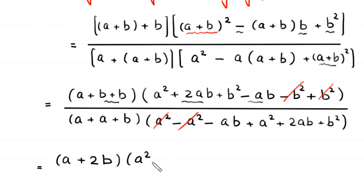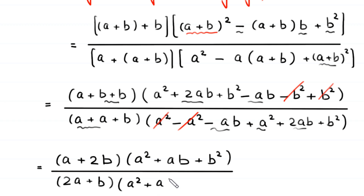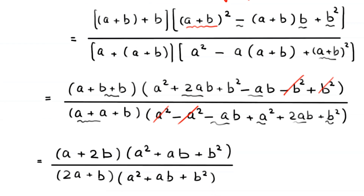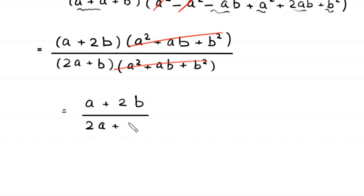In the numerator: 2ab minus ab gives plus ab, and the remaining b squared terms cancel with each other. In the denominator: 2ab minus ab gives plus ab, and the remaining b squared terms appear similarly. The common factor (a squared plus ab plus b squared) cancels from numerator and denominator, leaving (a plus 2b) divided by (2a plus b).